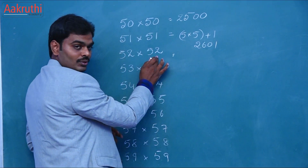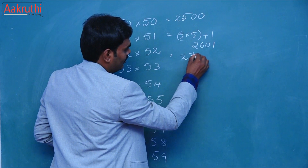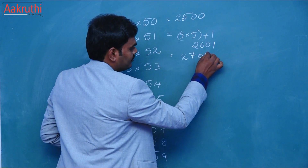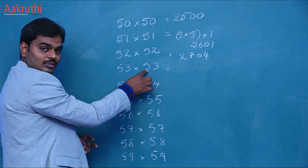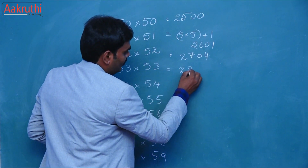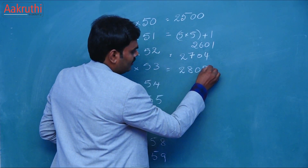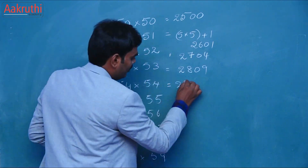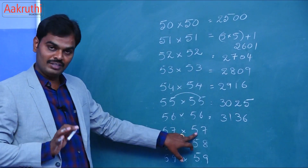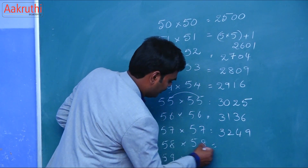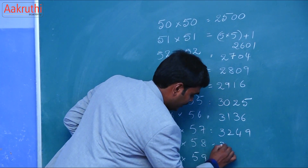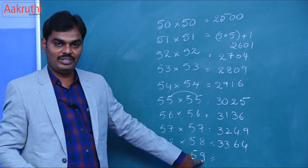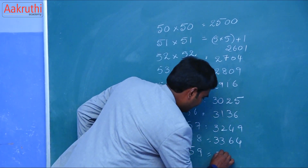That is 25 plus 2, the answer is 27, and 2 into 2 is 4, but we need to write 04. And next one is 5 into 5, 25 plus 3, 28, and 3 into 3 is 9, 09. And next 5 into 5, 25 plus 4. Here 5 into 5, 25 plus 8, this is 33 and 8 into 8 is 64. And here 5 into 5, 25 plus 9, 25 plus 9 is 34 and 9 into 9 is 81.